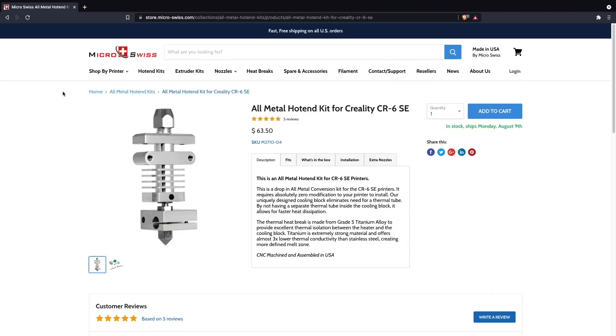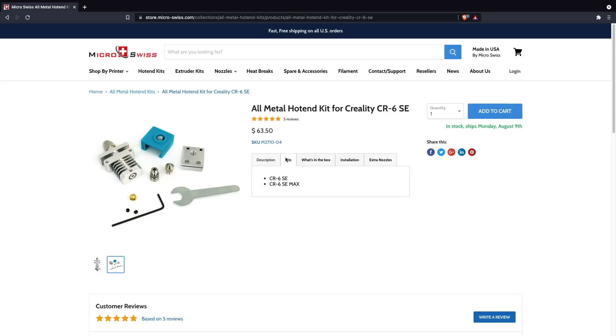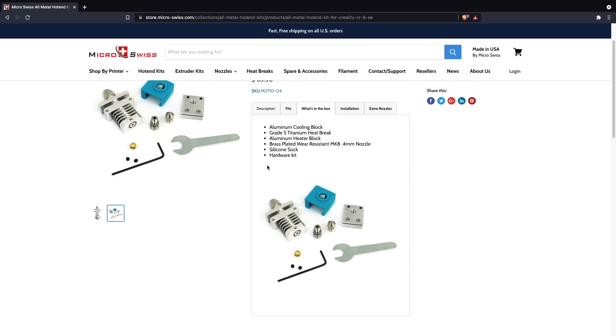Now, over the years, Creality has released a few different versions of their hotend, and they have done so again with the release of the Creality CR6SE and CR6SE Max. So, I was super excited to hear that Micro Swiss just recently released an all-metal hotend for that printer, and so in today's video, I'm going to take you guys through the install process of the all-metal hotend for Micro Swiss on the Creality CR6SE.